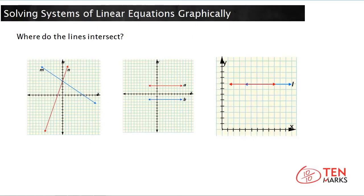In this lesson, you will learn how to solve systems of linear equations graphically. Every point on a graphed equation is a solution to that equation. For example, if a line goes through a point, that means when y is equal to 4, x will be equal to 3 in that equation. A system of equations is a group of equations graphed on a single coordinate plane, and the solution is where those two lines intersect each other.